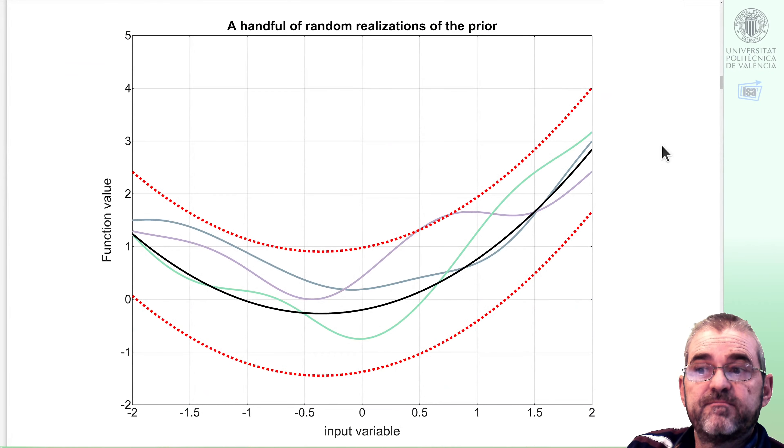With this multivariable normal random, I can get realizations of those random functions in these test points. With some plotting, I get this prior, the mean in black, the confidence intervals in dotted red, and some of the realizations in purple, green, bluish color. So this is my prior.